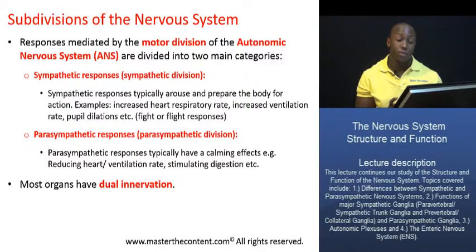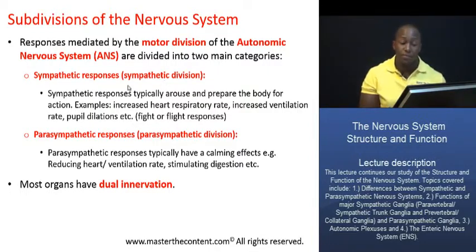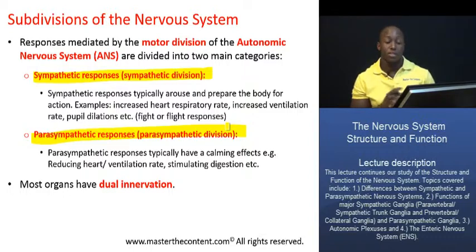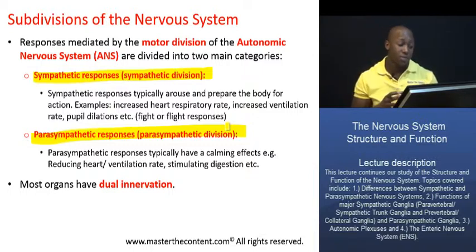On this slide we are going to further divide the ANS, the autonomic nervous system, into two main divisions. We're going to divide it into the sympathetic division, or the division that mediates sympathetic responses, and also into the parasympathetic division, or the division that mediates parasympathetic responses. These are the two main divisions of the ANS, of the motor division of the ANS, the autonomic nervous system.